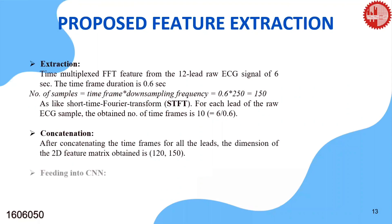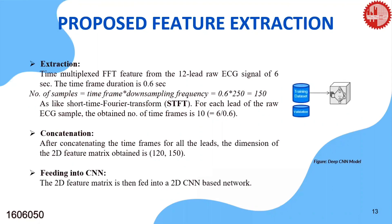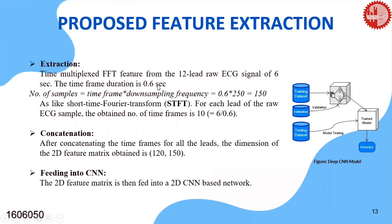This is our proposed feature, where we adopted the FFT method to extract frequency-domain features called Time-Multiplexed FFT, or TMFFT, which is modified by us. For each 6-second 12-lead ECG sample, we extracted the TMFFT feature. Firstly, we divided the sample into time frames with a duration of 0.6 seconds each. Then each time frame is converted into the frequency domain by applying FFT, resulting in successive time frames where each includes the Fourier transform features of that frame. The calculation of total data samples per time frame and total time frames per ECG record is also shown.